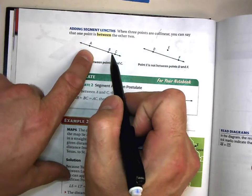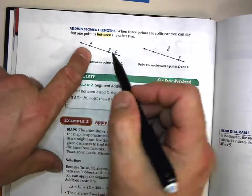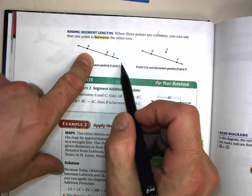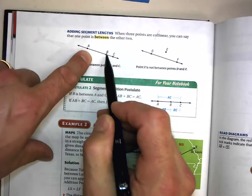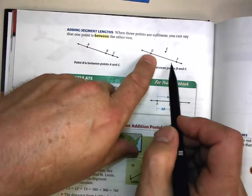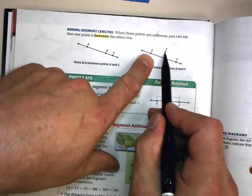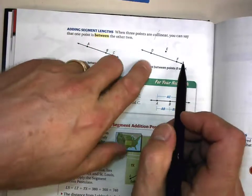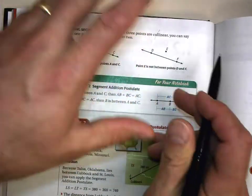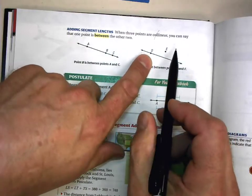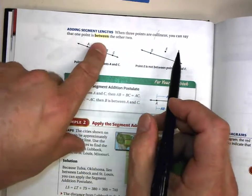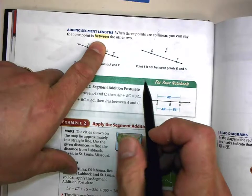These three points are collinear and point B is between points A and C. Point E is not collinear. Point E is sort of between points D and F, but in geometry the word between is a technical term. Point E is not between—in order to be between it has to be collinear and between.